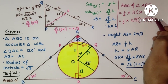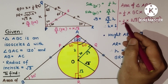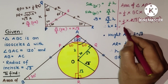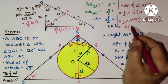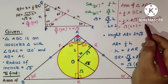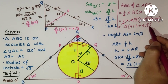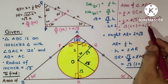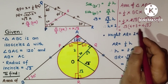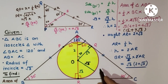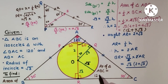So the area equals root 3 times (2 plus root 3) squared. Expanding: 2 squared is 4, root 3 squared is 3, and 2 times 2 times root 3 is 4 root 3. So this equals root 3 times (7 plus 4 root 3), which gives 7 root 3 plus 4 root 3 times root 3, equals 7 root 3 plus 12, which is 12 plus 7 root 3. This is the required area of triangle ABC — 12 plus 7 root 3 square units.